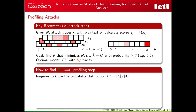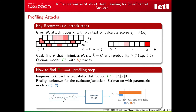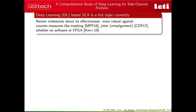How do we find this optimal model? The good news is that an analytical solution exists: the conditional probability distribution of Z given X. The bad news is that this optimal model is unknown and must be estimated with parametric models described by parameter vector θ — for example, with Gaussian templates where θ denotes mean vectors and covariance matrices. Over the past few years, deep neural networks have emerged as a new class of parametric models, shown to be particularly effective against implementations protected by countermeasures such as masking or desynchronization.